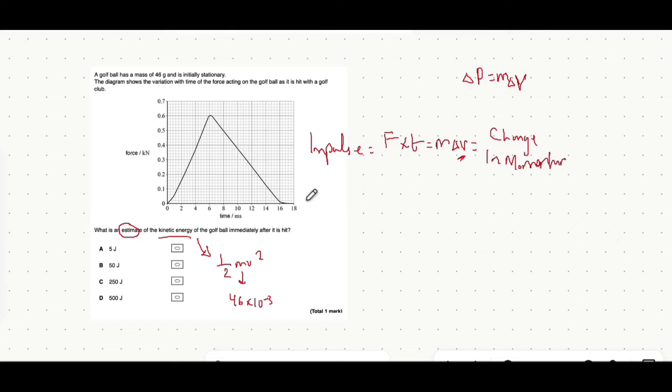It is an estimate of the area under the graph because there is a curved section. But what we're going to assume is that it's like a perfect triangle. That's why again it's an estimate.